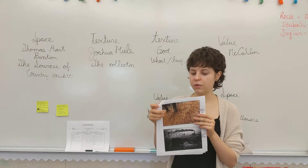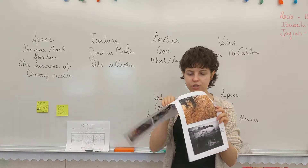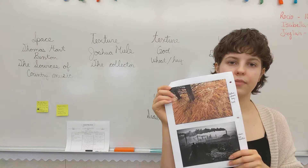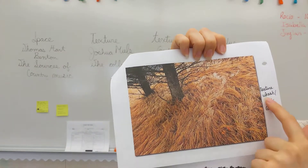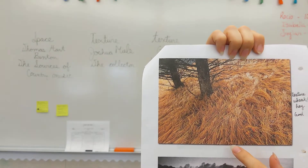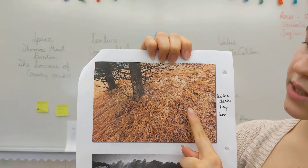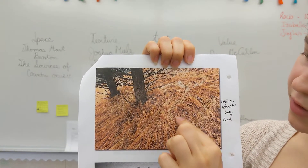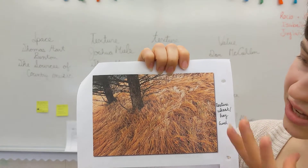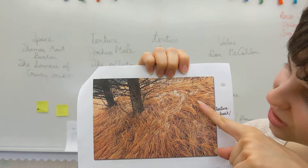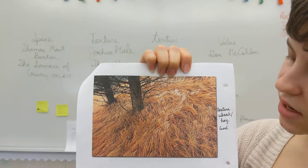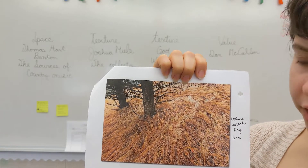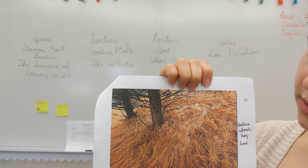The first one we're going to look at — flip the page over — is the wheat. This is dealing with texture. You can see all of the different lines, and it looks kind of soft but also a little prickly, doesn't it? So it's wheat slash hay, and who was the creator of this? God was.